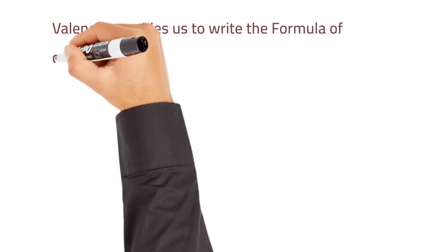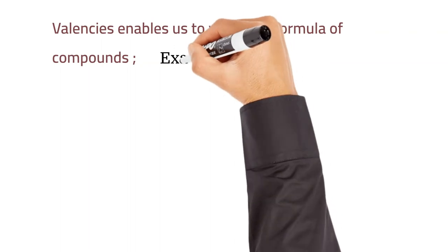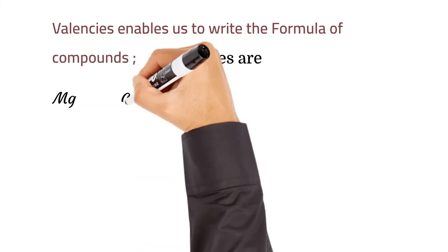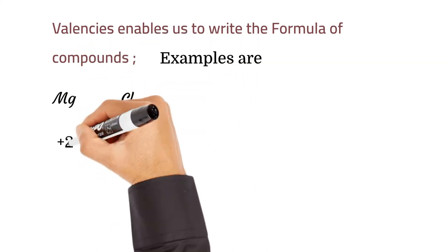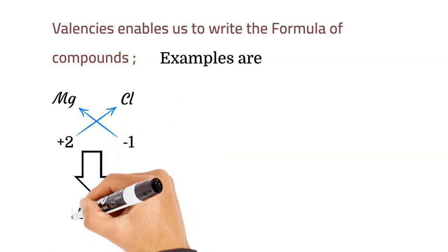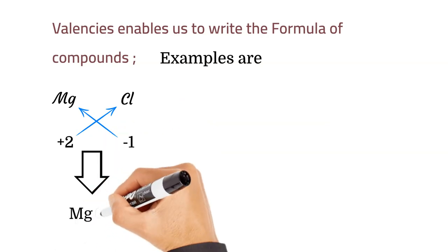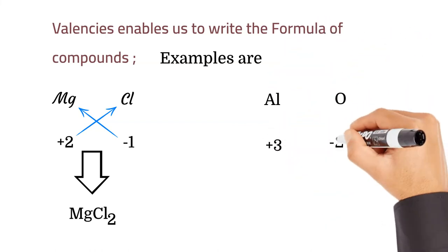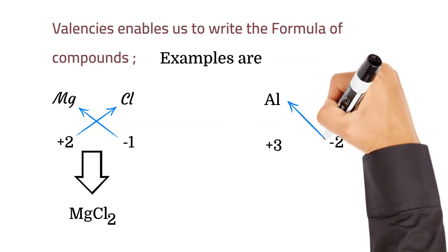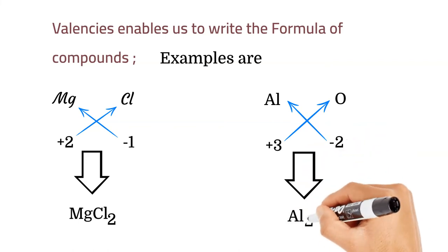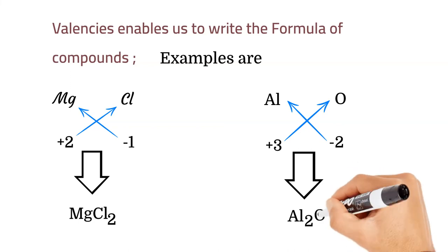Valencies enable us to write the formula of a compound. When you bring valencies together from various elements, they help you form compounds. For example, magnesium and chlorine: their valencies combined give MgCl2, magnesium chloride. Aluminum and oxygen, valency +3 and -2, crossed gives Al2O3, aluminum oxide.